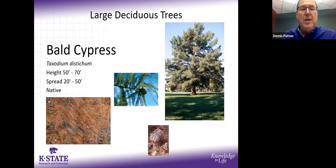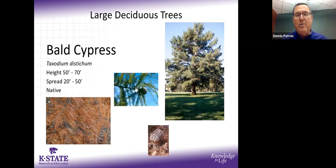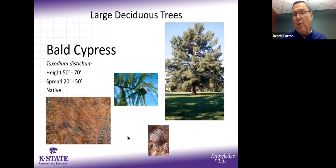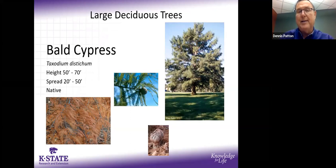Bald cypress is probably the best tree for a really wet area, but it will also do well in dry areas. It's a deciduous conifer — the seed structure is actually a cone. It has a beautiful rust-orange-brown fall color. In wet areas you can get cypress knees, which can present tripping and mowing problems, but if you have a sump pump outlet or chronically wet area, this is the tree to look at.